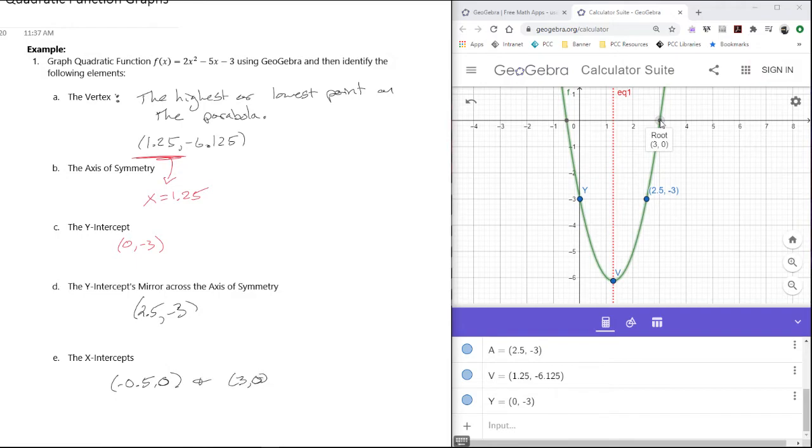We'll go ahead and put those into the inputs for GeoGebra. I'll call it x1 = (-0.5, 0).